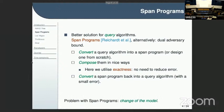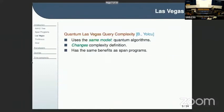One small problem — or maybe a feature, depending on how you think about it — is the change of model. Span programs look completely different from query algorithms, so if you are used to quantum algorithms, getting used to span programs can be really complicated.